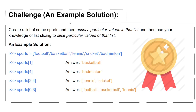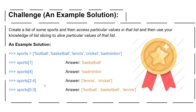Here is an example solution. I make a variable called 'sports' and assign it to five values: football, basketball, tennis, cricket, and badminton. I then access index 1, which gives basketball, and index 4, which gives badminton. I also slice index 2 to 4, which gives tennis and cricket, and index 0 to 3, which gives football, basketball, and tennis.